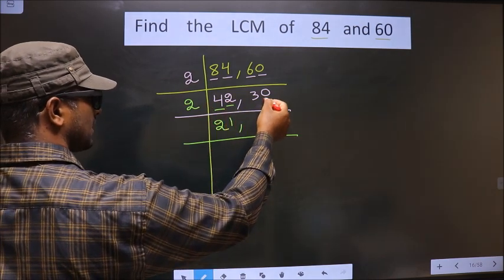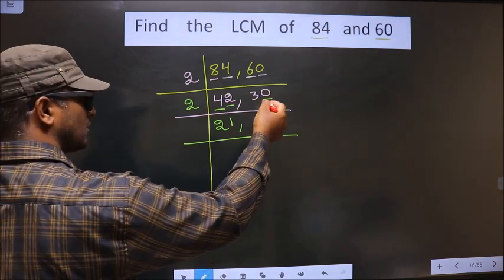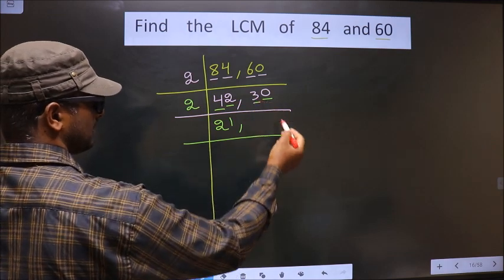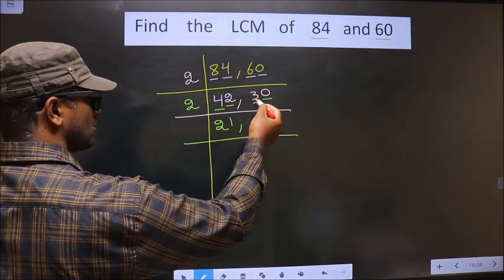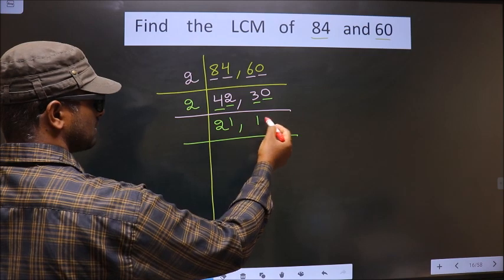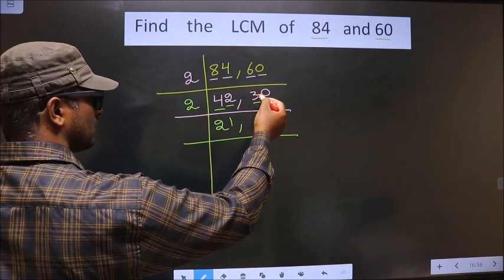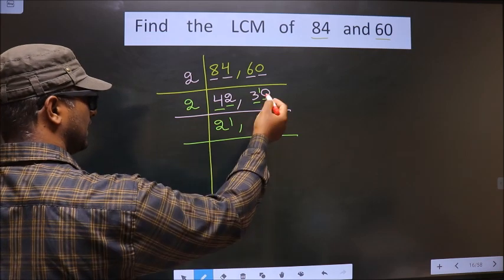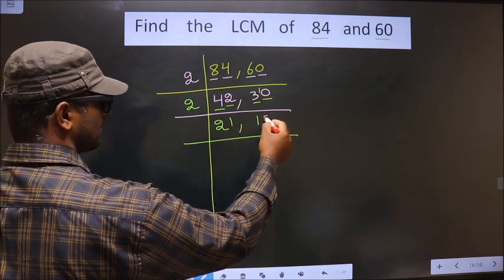Now, for this number, the last digit is 0, so even this number is also divisible by 2. First number is 3. A number close to 3 in the 2 table is 2 ones are 2. 3 minus 2 is 1, carried forward making it 10. When do we get 10 in the 2 table? 2 fives are 10.